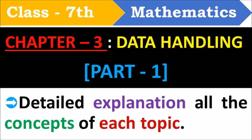This chapter is divided into two videos. This is the Part One video, which covers a detailed explanation of all the concepts such as collection of data, organization of data, arithmetic mean, mode, mode of large data, median, use of bar graphs for different purposes, chance, and probability. Part Two covers the NCRT exercises and questions with solutions in a simple method.